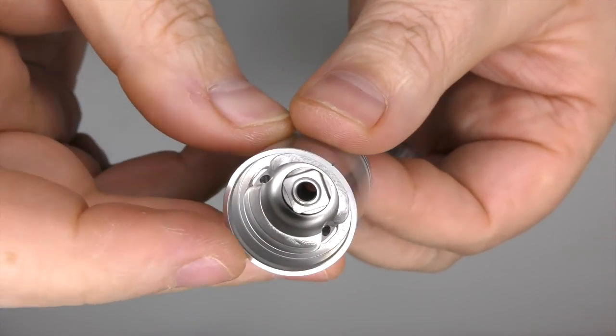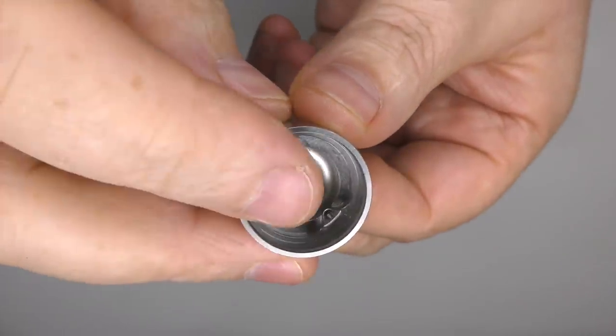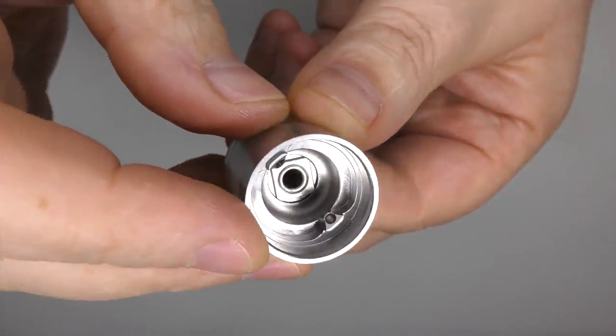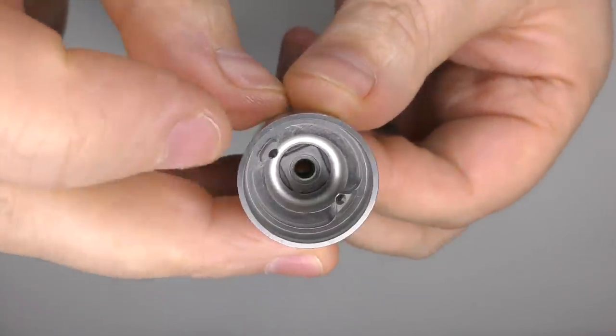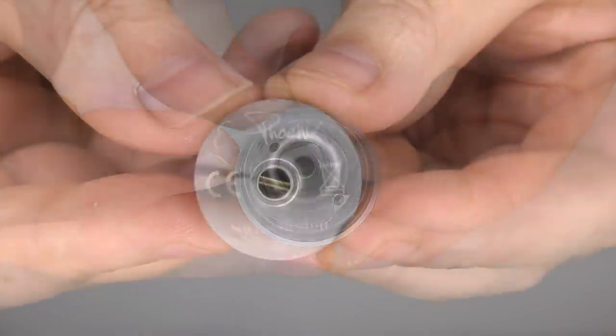I forgot to put that in my notes there, but just putting my calipers in there, and it's about two millimeters in diameter for each of the wicking holes.